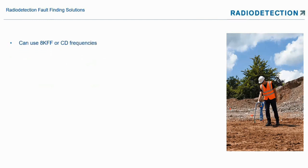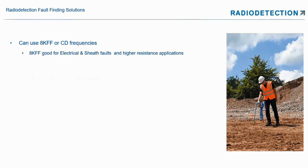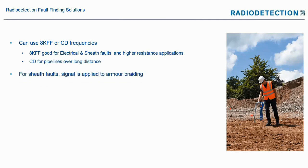For fault finding, we either use 8 kHz fault find or CD frequencies. 8 kHz fault find is used for finding faults on cables, and CD fault find is used for pipelines. For sheath faults, we apply the signal to the armor braiding — the shield, sheath, or armor.